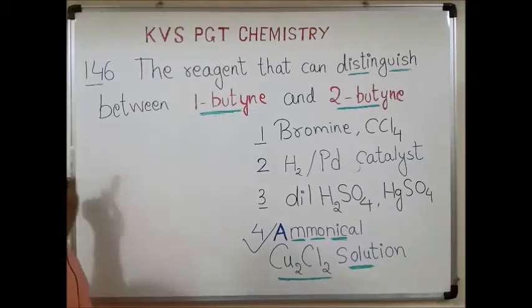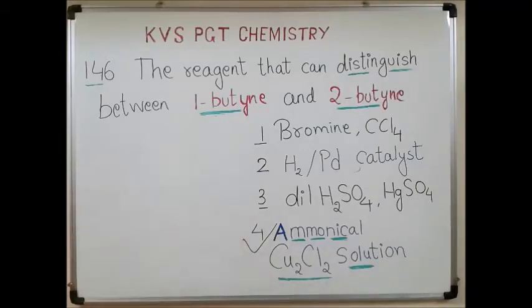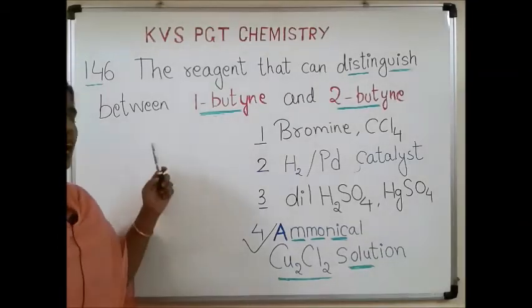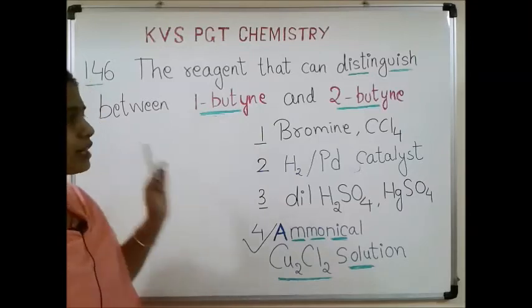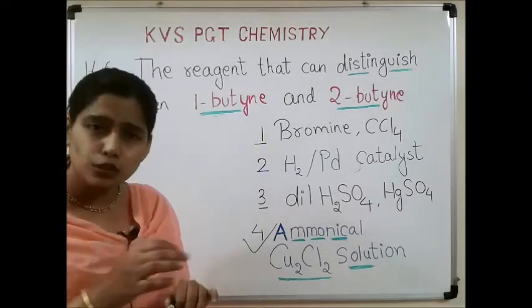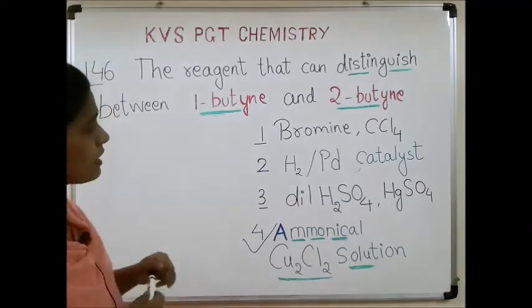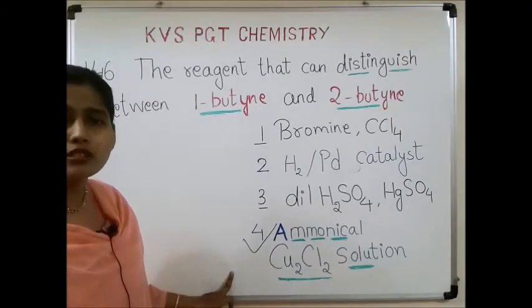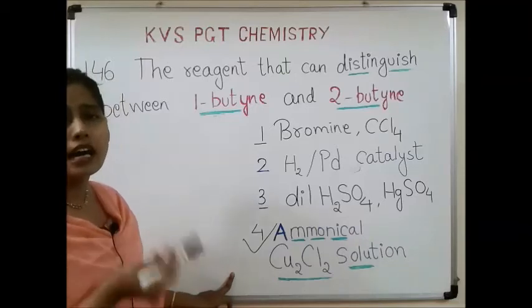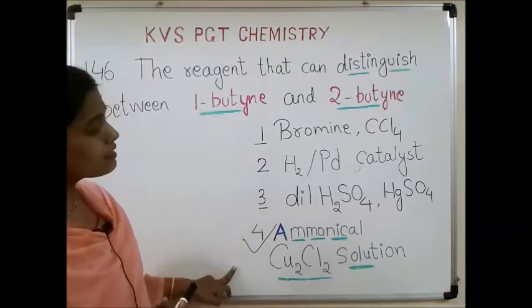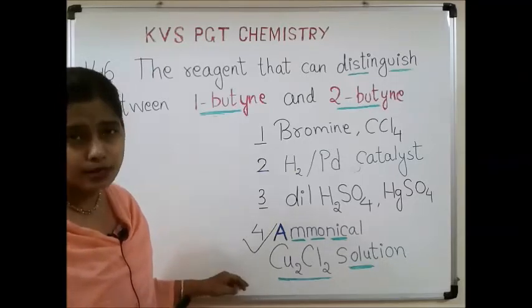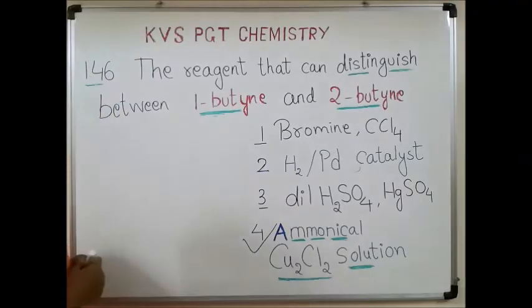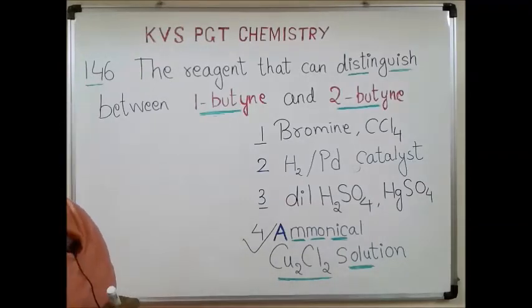Now see question number 146. You have to identify the reagent that can distinguish between 1-butyne and 2-butyne. The correct answer is ammoniacal Cu₂Cl₂ solution, that is cuprous chloride. Now let us see how this ammoniacal cuprous chloride solution is able to distinguish between 1-butyne and 2-butyne.